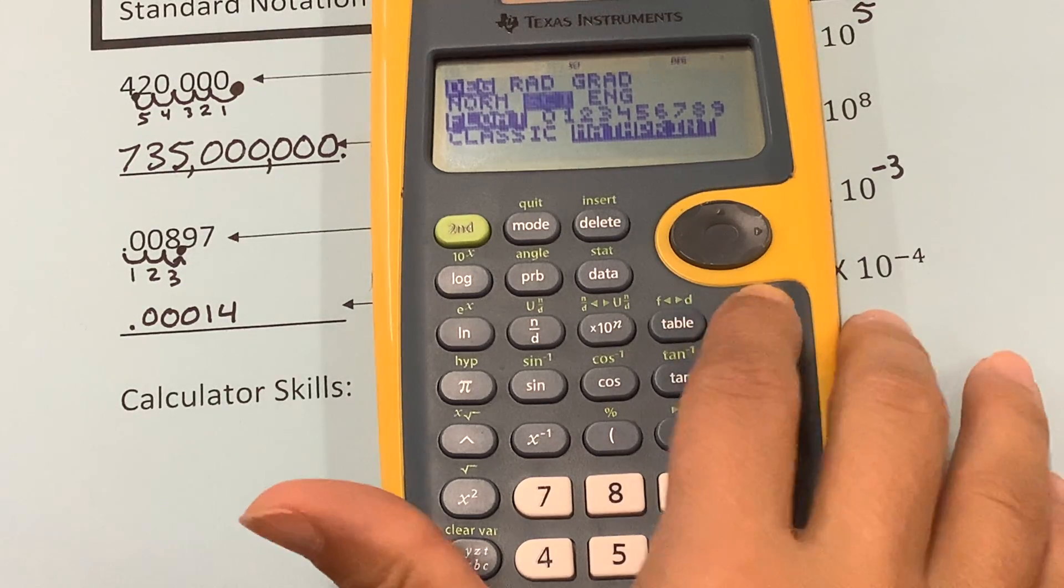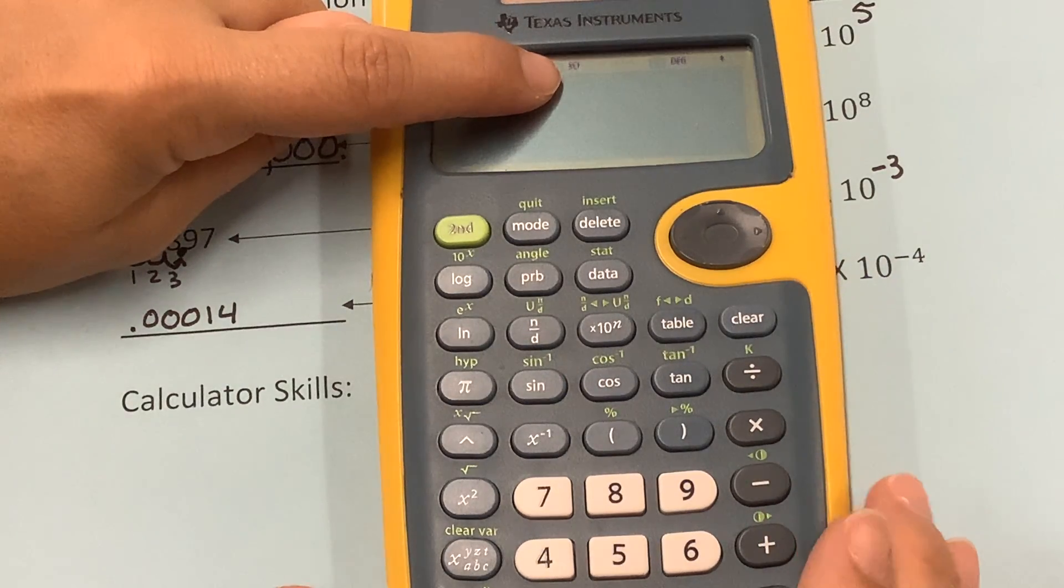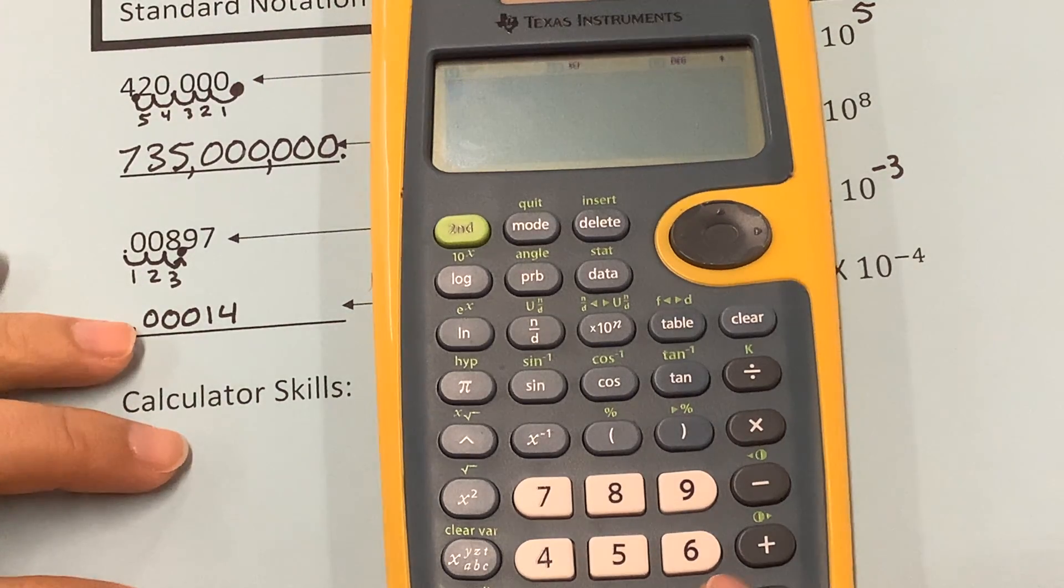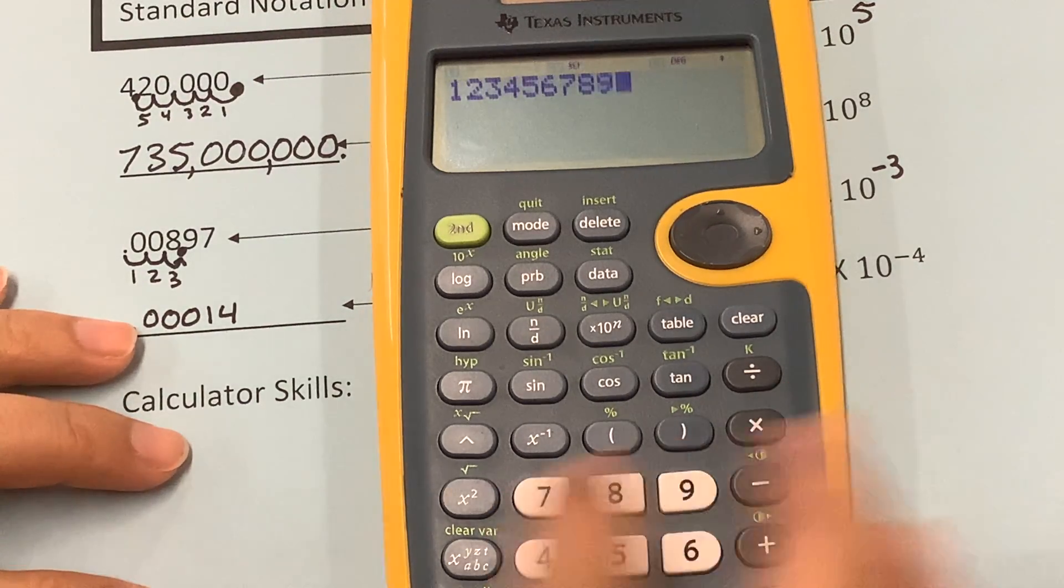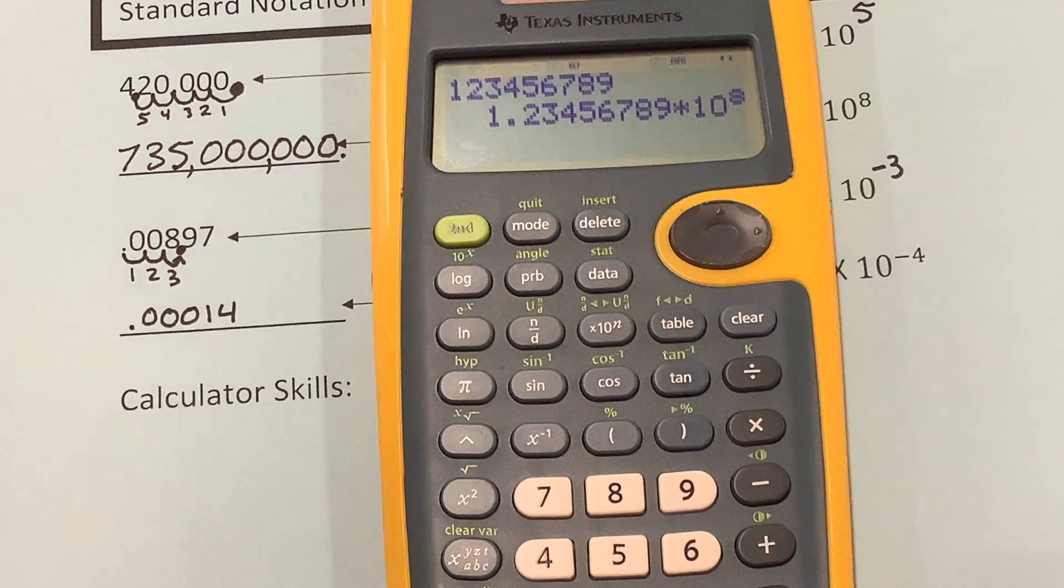We're going to clear it. You see at the top of your screen where it says SCI. That's how you know that it's on. So now in your calculator, let's just do 123456789. Press enter. What did it do? It turned it into scientific notation for us.